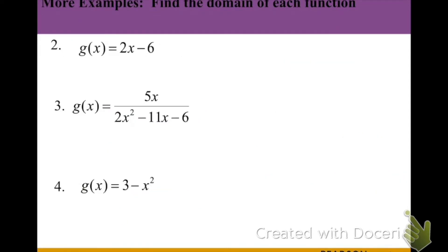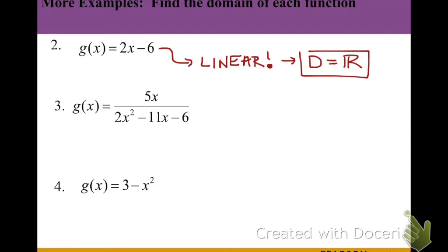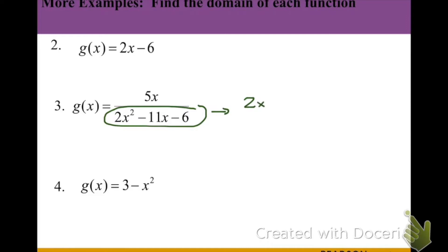Our next examples are going to look at all the different types of functions and finding those domains. In this first one, we note this is a linear function since x is only to the first power, so the domain is always going to be all real numbers. In our next example, this is a rational function — a fraction — so we need to find excluded values by setting the denominator equal to zero. We'll use the cross method since we have a trinomial with an a value greater than one.